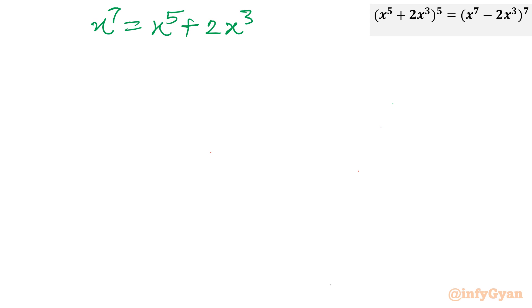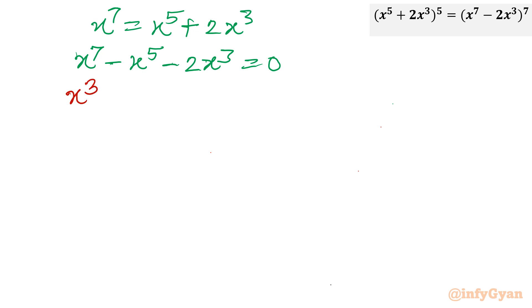Taking all terms to the left hand side: x⁷ - x⁵ - 2x³ = 0. Let us factor out x³, giving x³(x⁴ - x² - 2) = 0.